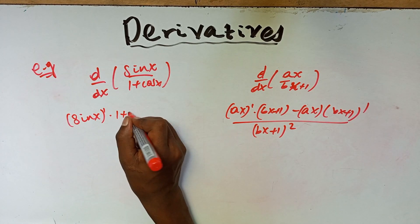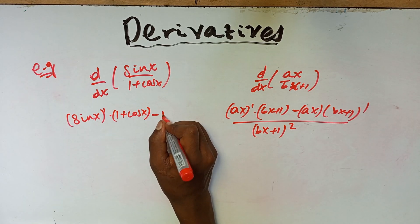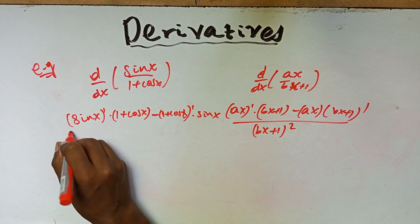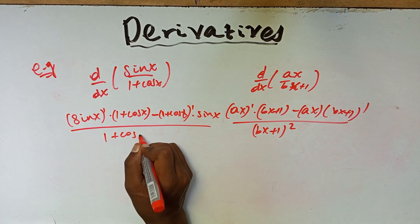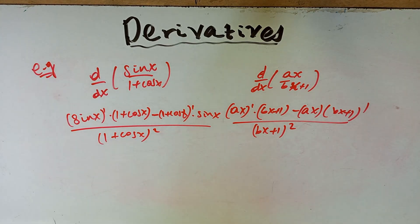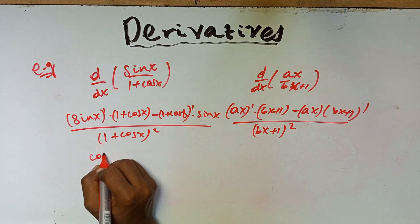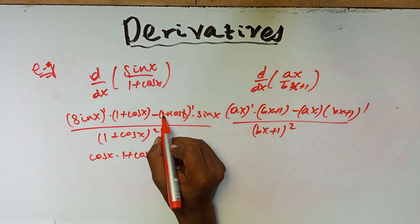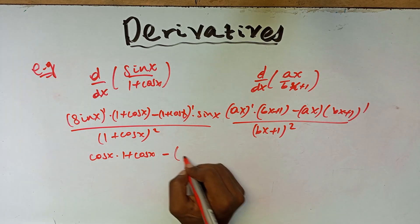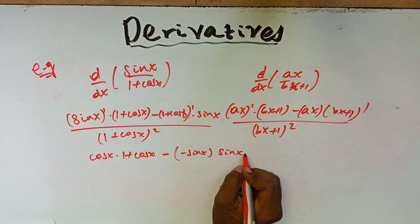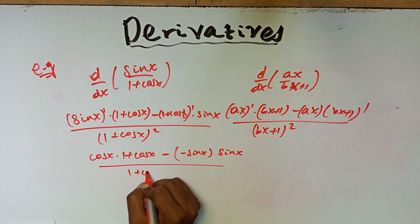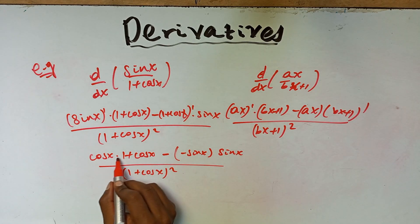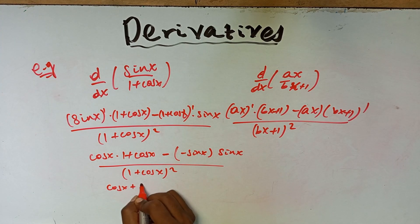Applying this formula: the derivative of sin x is cos x, so we get cos x times (1 plus cos x) minus sin x times the derivative of (1 plus cos x). The derivative of 1 is 0, and the derivative of cos x is minus sin x.